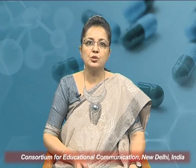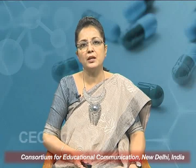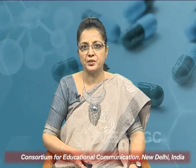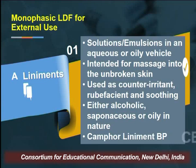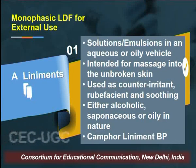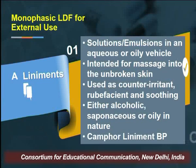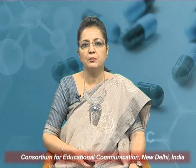Monophasic liquids meant for external use are generally applied on external body surfaces. The first type is liniments — solutions or emulsions of aqueous or oily vehicles intended to be massaged onto unbroken skin. They are generally used as counter-irritants, rubefacients, and for soothing effect. Liniments are either alcoholic, saponaceous, or oily in nature. Example: camphor liniment, official in the British Pharmacopoeia.